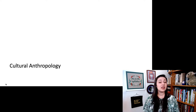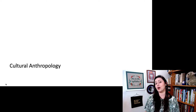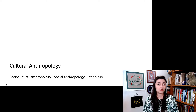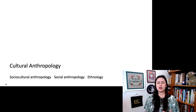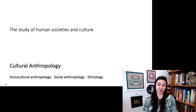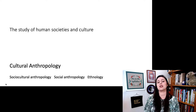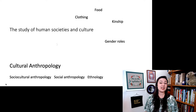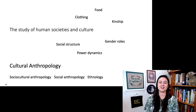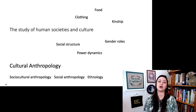Next we have cultural anthropology. You might also hear it called sociocultural anthropology, social anthropology, or ethnology — these are slightly different terms but broadly mean the same thing. This is the study of human societies and culture. A cultural anthropologist might look at clothing, food, kinship, gender roles, social structure, and of course the power dynamics amongst all these things. Social structure and kinship are a huge thing in cultural anthropology, as well as material goods and beliefs.